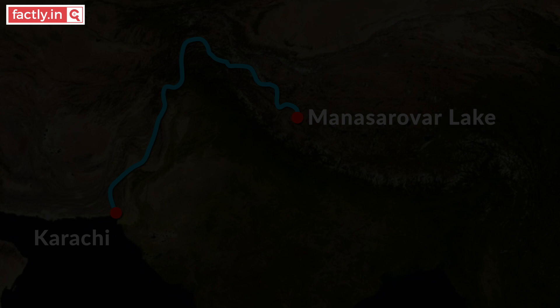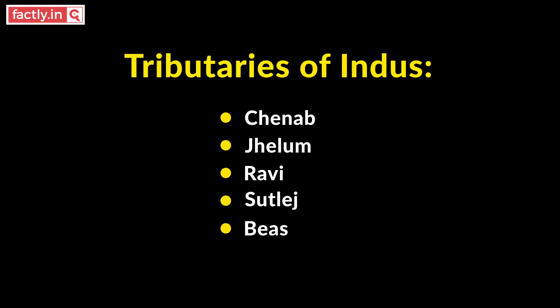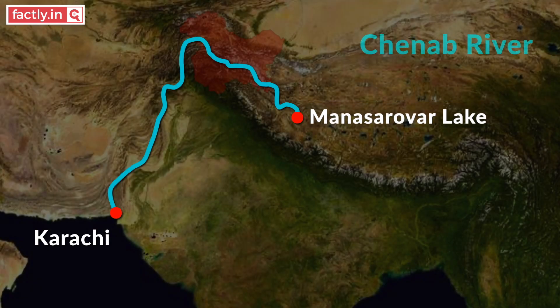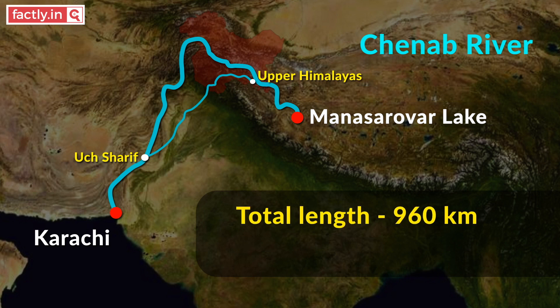Indus has five major tributaries: Chenab, Jhelam, Ravi, Satlaj, and Beas. We get the name Punjab from these five rivers. Chenab river originates in the upper Himalayas in Himachal Pradesh and joins the Indus river in Uch Sharif, Pakistan. As per the Indus Water Treaty, the waters of Chenab are allocated to Pakistan. The length of the river is 960 km, of which 431 km is in India.